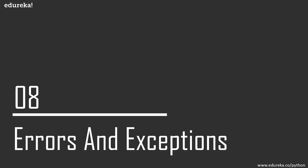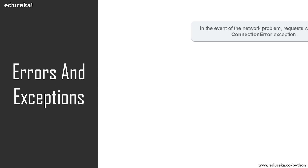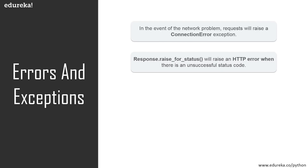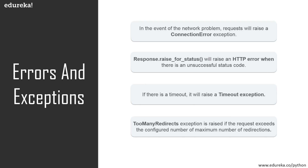Now let's take a look at errors and exceptions in Python requests. In the event of a network problem — for example a DNS failure or a refused connection — requests will raise a ConnectionError exception. It will raise an HTTPError if the HTTP request returns an unsuccessful status code such as 404 or 405. If a request times out, a Timeout exception is raised, and if a request exceeds the configured number of maximum redirections, a TooManyRedirects exception is raised.